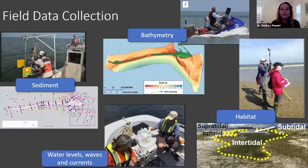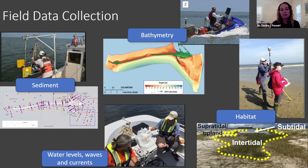The first component was the field data collection campaign. A variety of data was collected, including sediment cores to look at variability of sediment characteristics and to parameterize morphologic models. We collected bathymetry to understand recent changes in bed levels and to provide a present-day digital elevation model for model inputs. We also collected water levels, waves, and currents for model validation, and habitat distribution and characterization to provide baseline data for the habitat models.